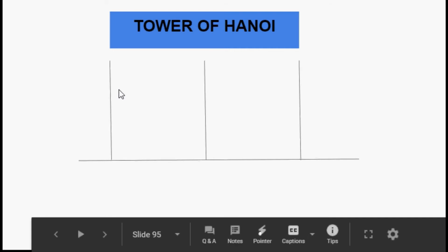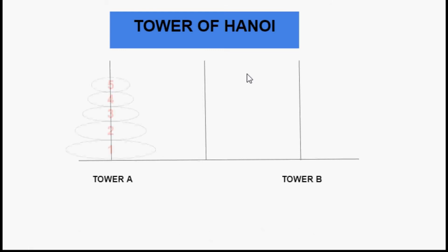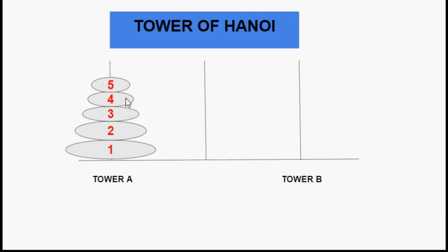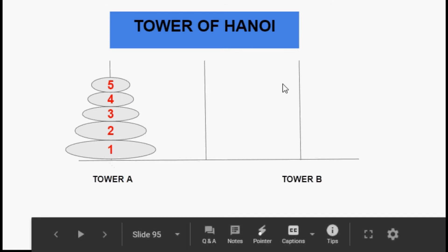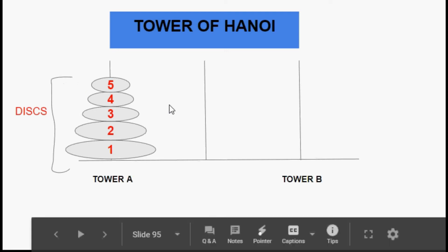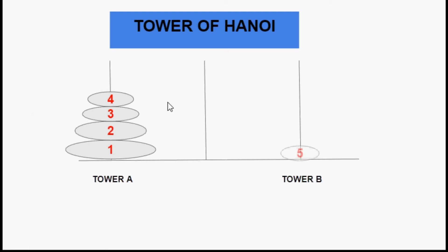Let's look at the Tower of Hanoi example again. We have three rods and n number of discs — here I have taken five. Our target is to move all discs from tower A to tower B. Following the stack principle of last in first out, disc number five was the last inserted, so I take it out first and place it in tower B.